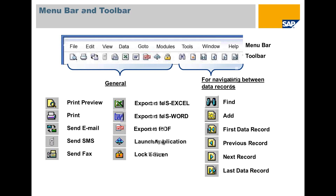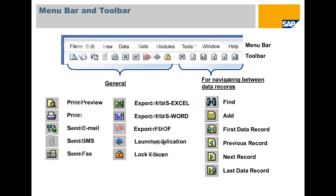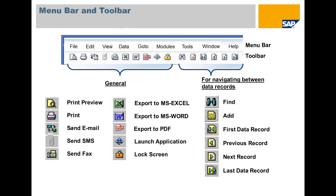The toolbar displays under the menu bar. The toolbar is a collection of icon buttons that grant you easy access to commonly used functions. The functions represented by the buttons are also available in the menu bar. Active functions appear in color and inactive functions are displayed in gray.